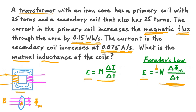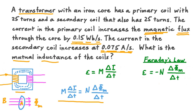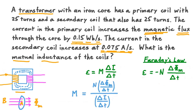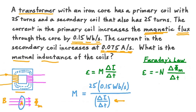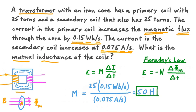We'll leave off the minus sign since we're only concerned with the magnitude of the EMF induced. So: M times delta I over delta t equals N times the time rate of change of magnetic flux. Dividing both sides by delta I over delta t, on the right-hand side we have N — the number of turns in the secondary coil, which is 25 — multiplied by the time rate of change of magnetic flux, 0.15 Webers per second, divided by the time rate of change of current in the secondary coil, 0.075 amperes per second. When we calculate this fraction to two significant figures, we find a result of 50 Henrys. That's the mutual inductance of the two coils.